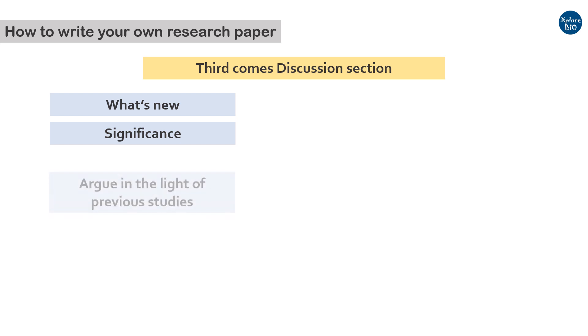Coming on to the discussion part. It needs a scientific temperament to write a good discussion. It is worth to know and highlight what new you found through your study. How your findings are useful for the science and scientific community. For this, it is very very important to understand your results first. What your results are trying to reveal. If you have done literature review properly, you can easily discuss and argue your results in the light of previous findings.